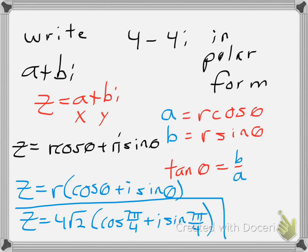Now I could distribute my 4 square root of 2 and get a decimal answer for this, or a more exact answer. But if I want just polar form, I'm fine to end this right here and stop with my value.